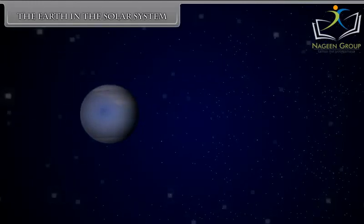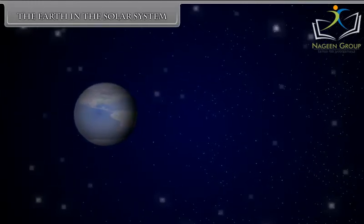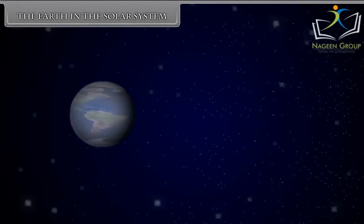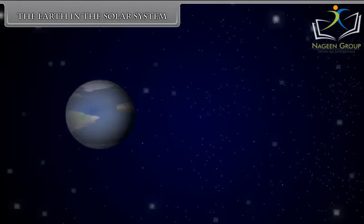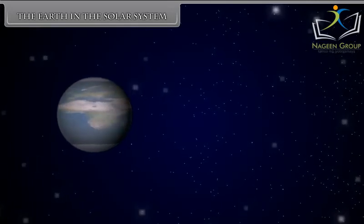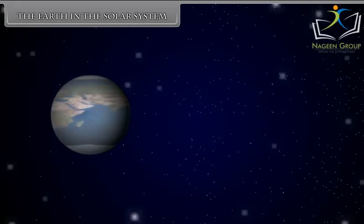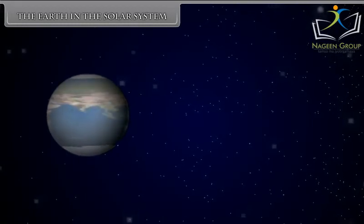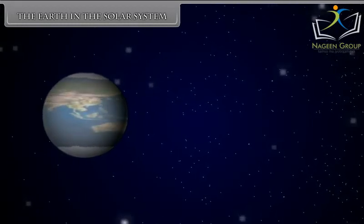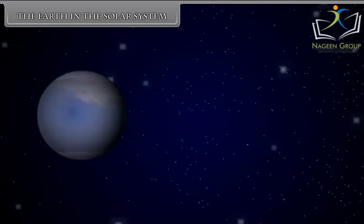The Earth in the Solar System. As night falls, we can see thousands of twinkling objects in the sky. The sun and all these twinkling objects are called stars. We feel we are surrounded by shining celestial bodies. We cannot count these celestial bodies with our naked eyes because they are several millions of kilometers away from us.